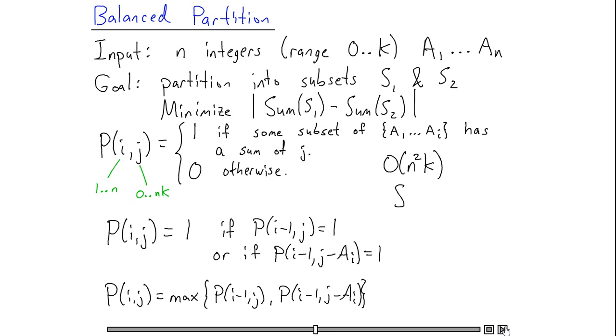So to do that, let's let s denote the sum of all of the integers in my original set, divided by 2. And what I'd like to do is find a subset of the elements a1 through an whose sum is as close to s as possible.